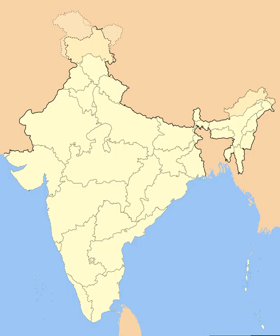The ten Part C states included both the former chief commissioner's provinces and some princely states, and each was governed by a chief commissioner appointed by the President of India. The Part C states were Ajmer, Bhopal, Bilaspur, Coorg, Delhi, Himachal Pradesh, Kutch, Manipur, Tripura, and Vindhya Pradesh.